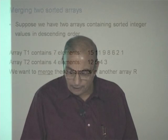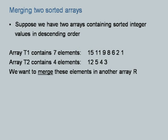Here is the merge problem. Array T1 contains seven elements: 15, 11, 9, 8, 6, 2, 1, sorted in descending order. Array T2 contains four elements: 12, 5, 4, 3, also sorted in descending order. It so happens that in these two arrays the values are unique across both arrays, but this is not necessary — the same value can recur in both arrays.